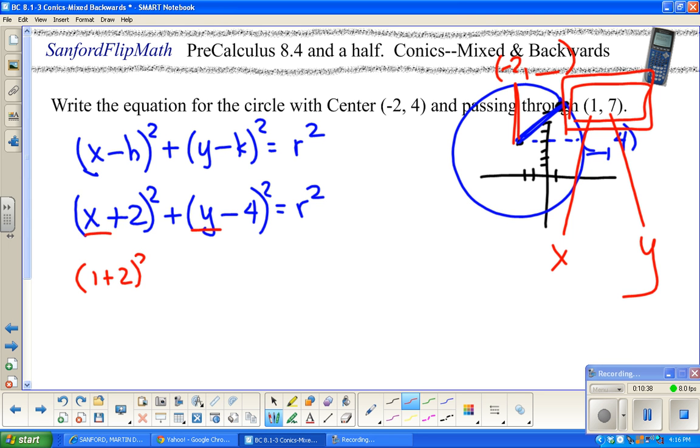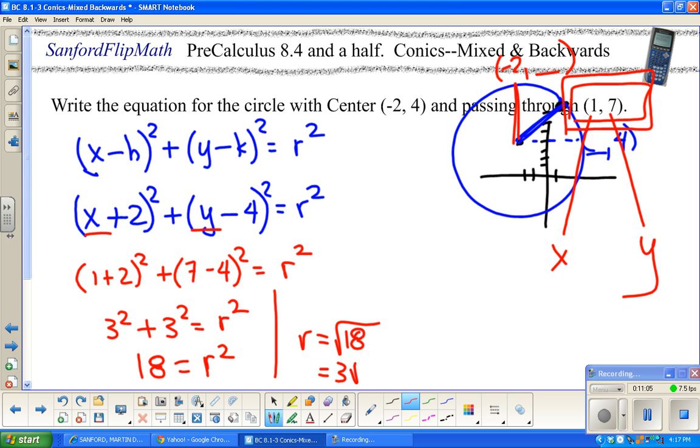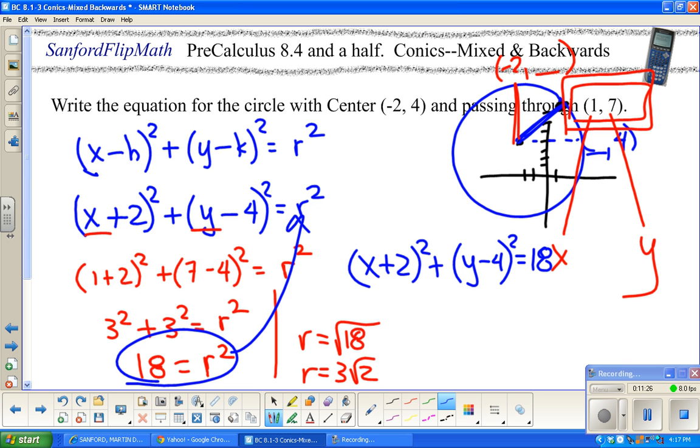So here I go. I'm going to do 1 plus 2 squared. I don't want to put the letter y, I want to put the y value in: 7 minus 4 squared equals r squared. This is 3 squared, 7 minus 4 is 3 squared, so this is 9 plus 9 is 18. It's worth noting, the radius will be the square root of 18, which is 3 root 2, but honestly they don't ask you for that. All you need to do is put the r squared where the r squared goes.